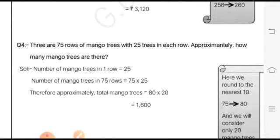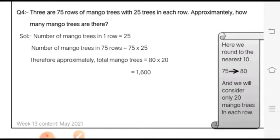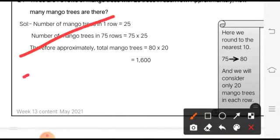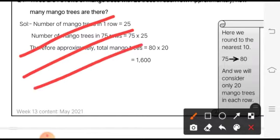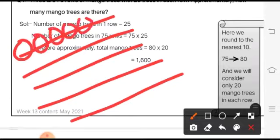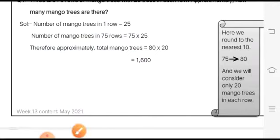Next question: there are 75 rows of mango trees with 25 trees in each row. Approximately how many mango trees are there? If there are 75 rows - row 1, row 2, row 3, and so on - we have 75 rows, and each row has been planted with 25 mango trees. We have to find the total number of mango trees, but not the exact number - we have to find the approximate number. That means we have to round off 75 and 25. Here you can see 75 is rounded off to 80, and 25 is rounded down to 20.